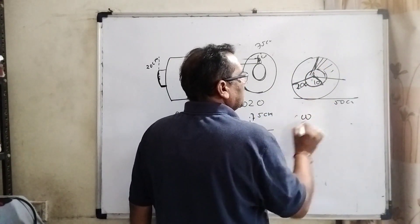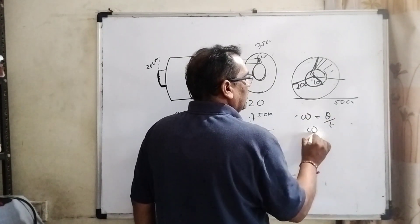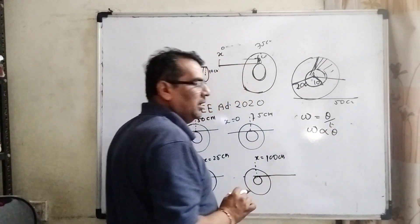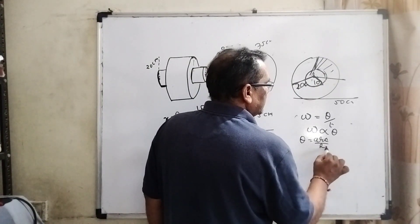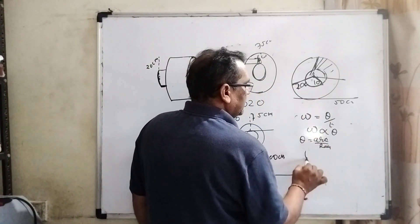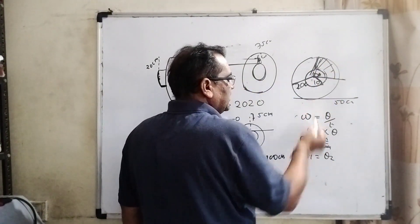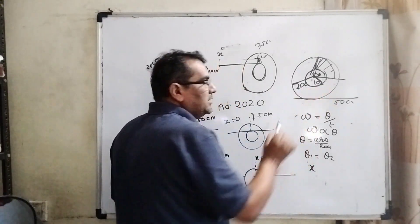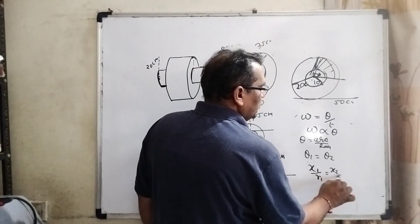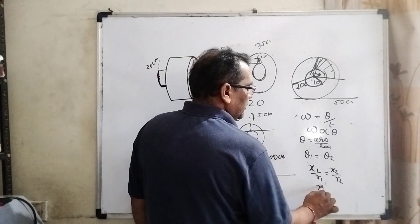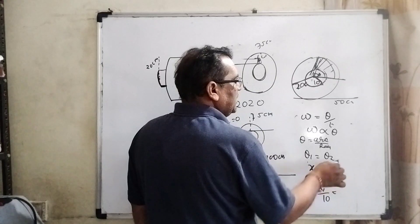Therefore, angular velocity equals theta by t. So angular velocity is directly proportional to theta. And what is theta? Theta equals arc upon radius. Then theta 1 equals theta 2, because the angle is the same - here the theta and this theta are the same, but arc and radius are different. So they are in equal proportion: x1 upon r1 equals x2 upon r2. x1 is to be found out. r1 is given as 10 centimeters. What is x2? Actually, x2 means 50 centimeters to move forward.